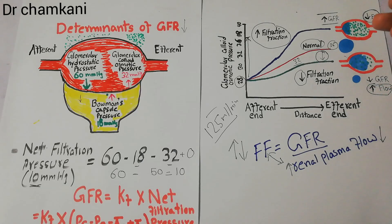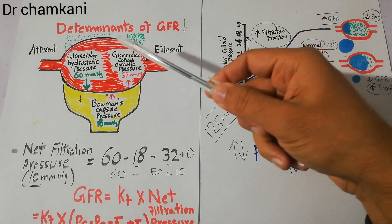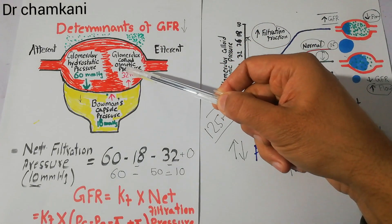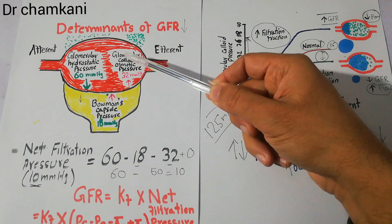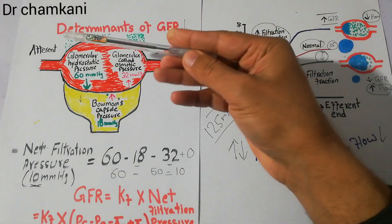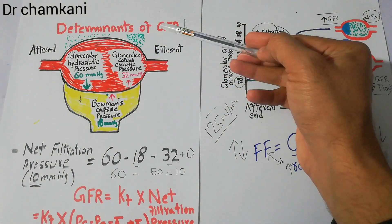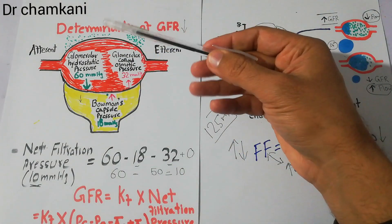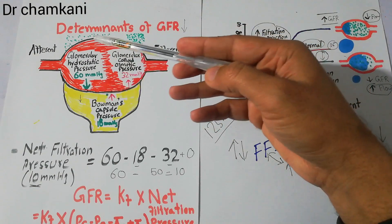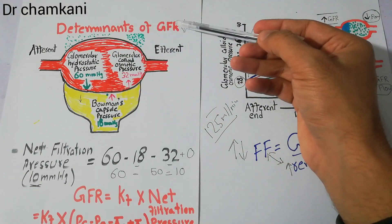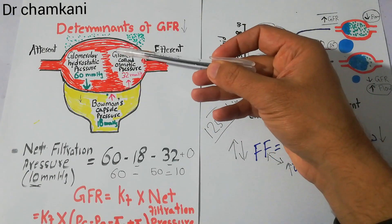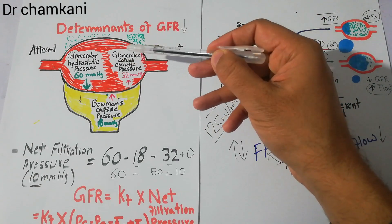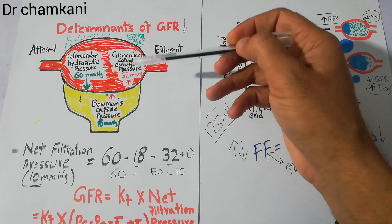Today in this lecture, we are going to talk about concepts related to glomerular colloid osmotic pressure and the significance of this pressure. As we are discussing determinants of GFR — glomerular filtration rate — we have mentioned previously that there are several determinants of GFR. One very important determinant is glomerular colloid osmotic pressure.